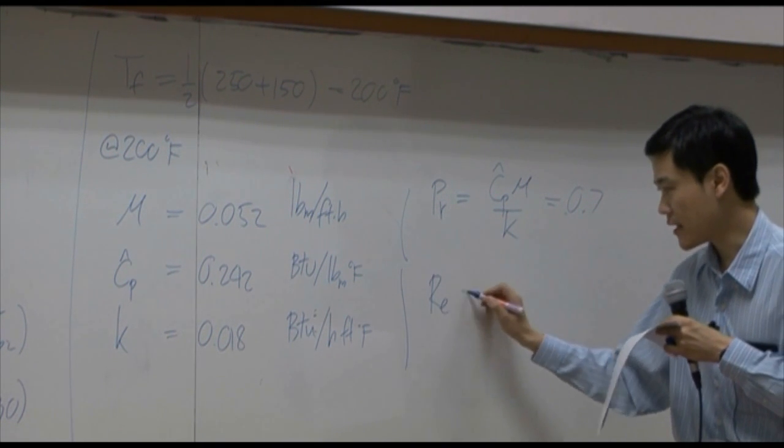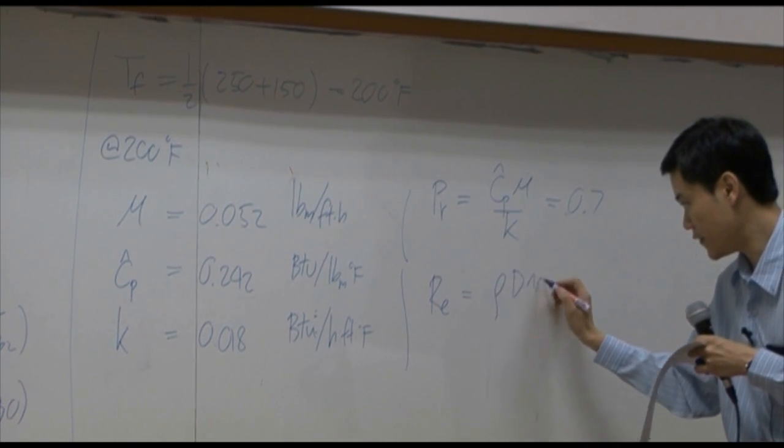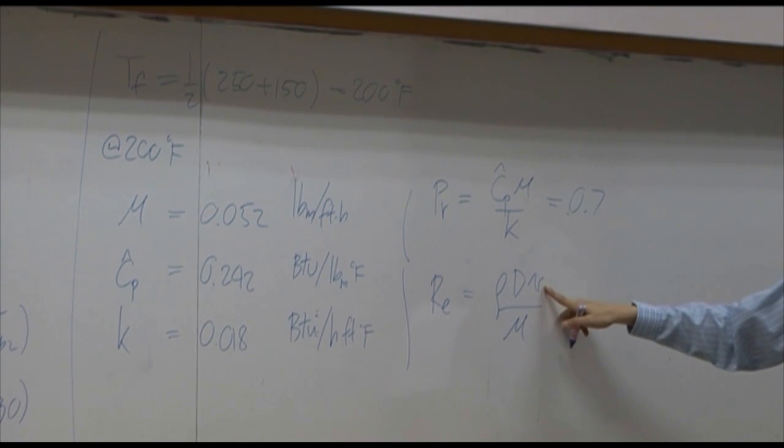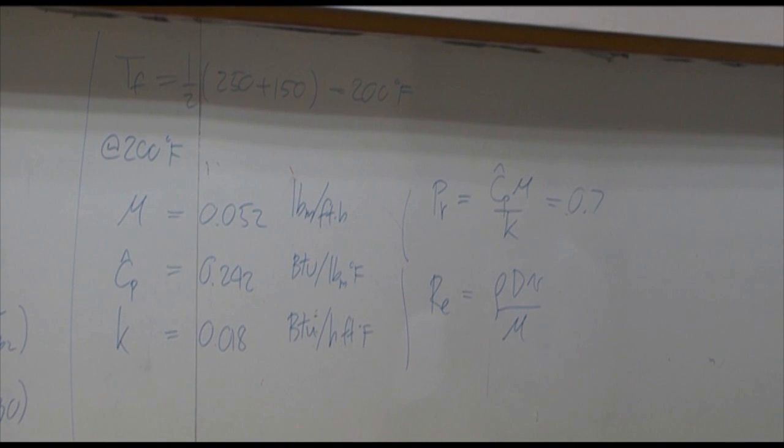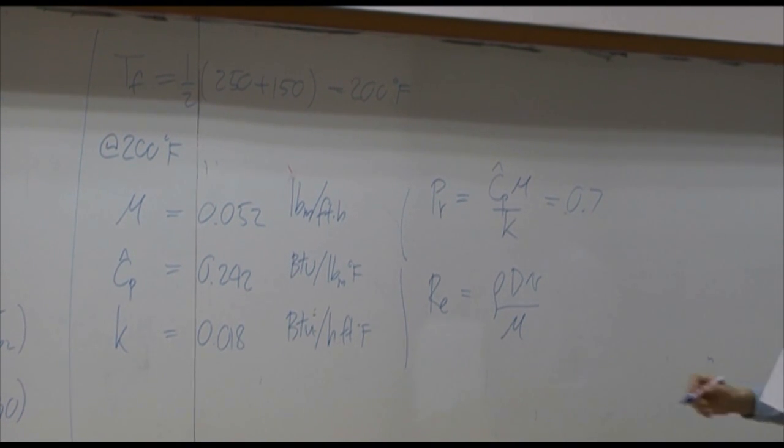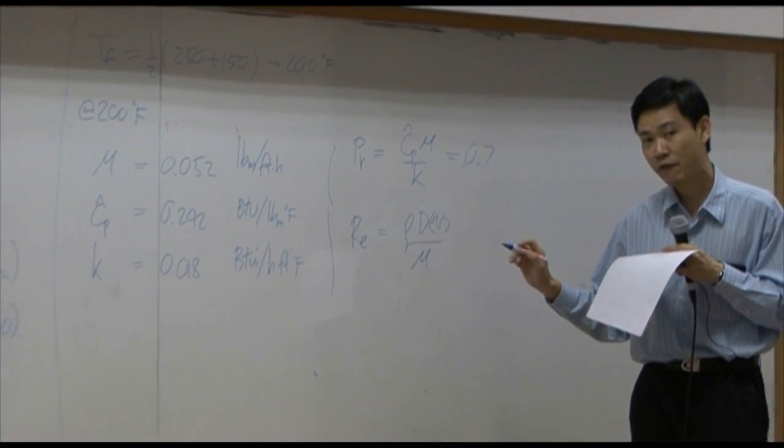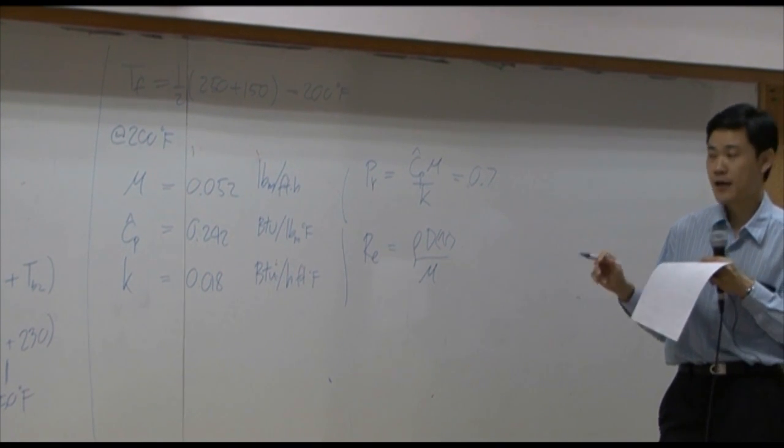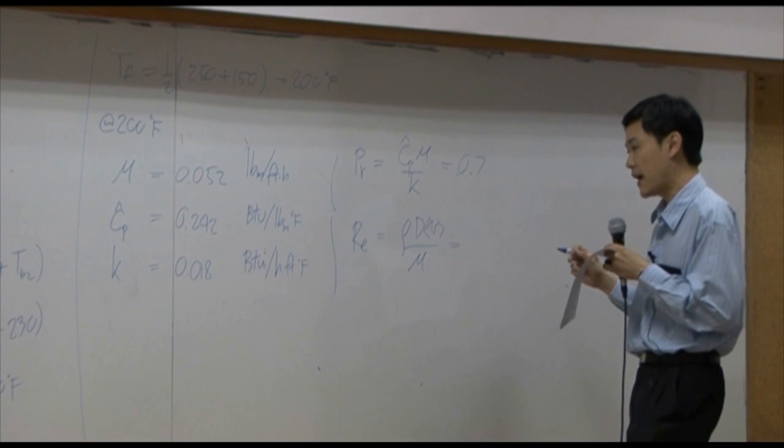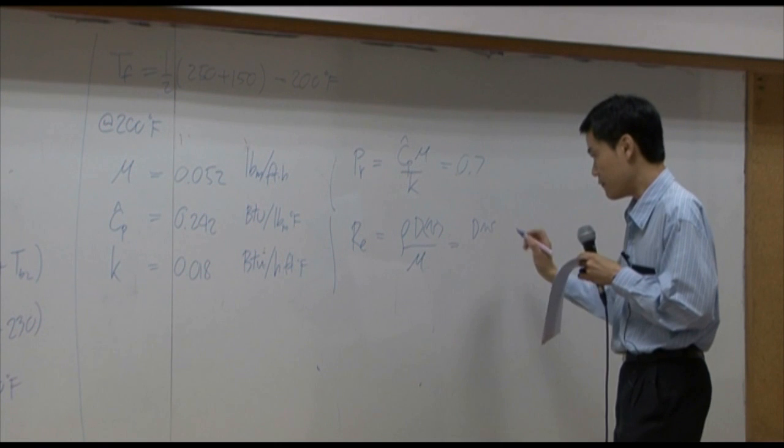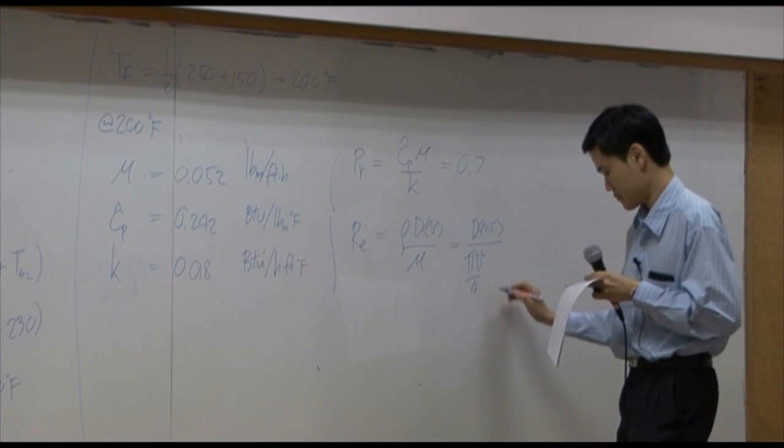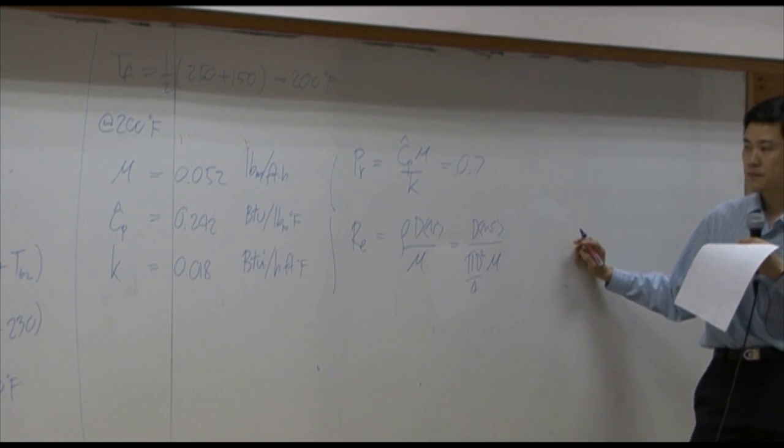At the same time, you can calculate Raynaud number. It's rho dV over mu. What is velocity? Do we know the velocity? Yes, because we know mass flow rate. In the calculation of Raynaud number, mostly we use average velocity instead of local velocity. You can change average velocity and density here into the average mass flow rate. So you end up with average mass flow rate here divided by cross-section area mu.